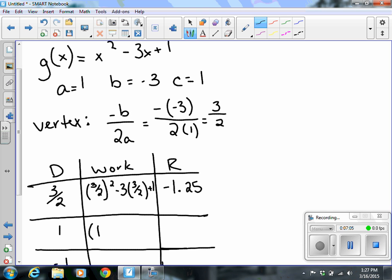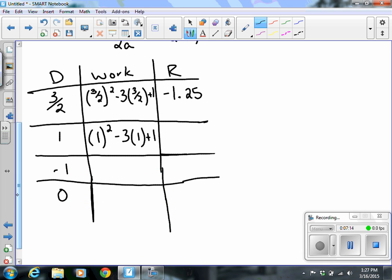I'm going to plug in the 1 now. So 1 squared minus 3 times 1 plus 1. I'll get nicer numbers, obviously, without the decimals. I know that 1 squared is 1. Minus 3 gives me negative 2. Negative 2 plus 1 gives me negative 1.